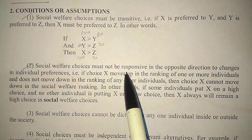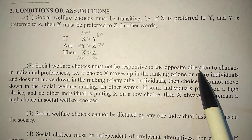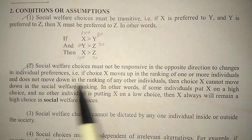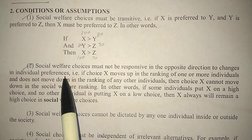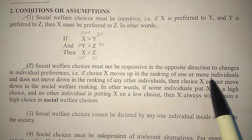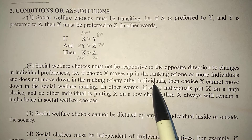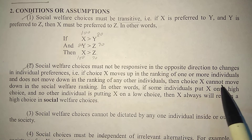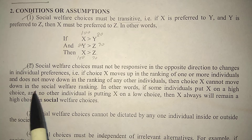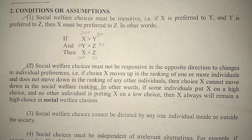Second condition: social welfare choices must not be responsive in the opposite direction to changes in individual preferences. That is, if choice X moves up in the ranking of one or more individuals and does not move down in the ranking of any other individuals, then choice X cannot be moved down in the social welfare ranking. This is the indifference curve consistency assumption.